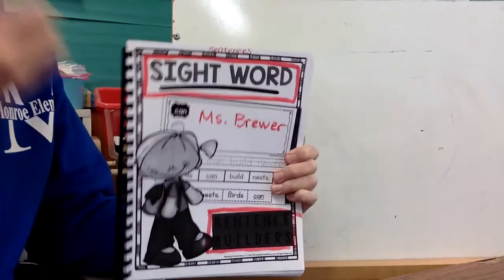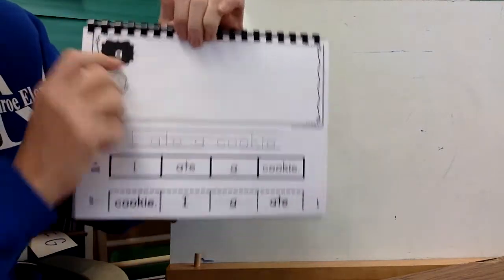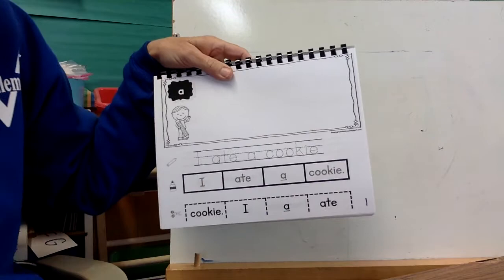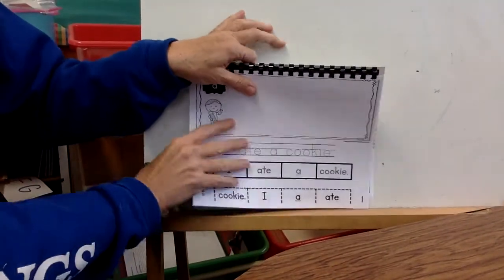So I'm going to put this over here on my easel. So you open up your booklet, and you can see that you turn it sideways so that you can see it correctly. Now here are the supplies you'll need in order to do your Sight Word Sentences book.